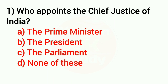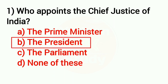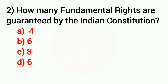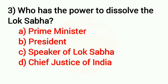Question number 1: Who appoints the Chief Justice of India? Answer: Option B — the President. Question number 2: How many Fundamental Rights are granted by the Indian Constitution? Answer: Option B — six.